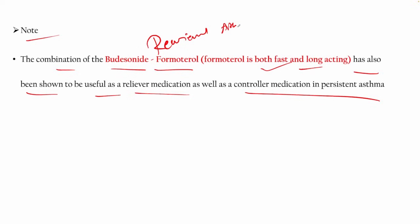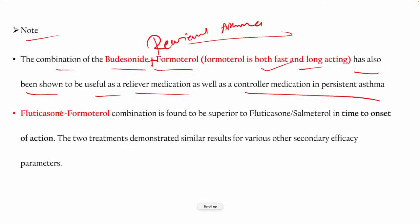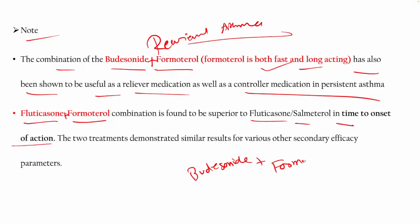You can use the combination of budesonide plus formoterol for long-term asthma control. Alternatively, the combination of fluticasone and formoterol is also superior to fluticasone and salmeterol in time to onset of action. These are two key combination treatment options.